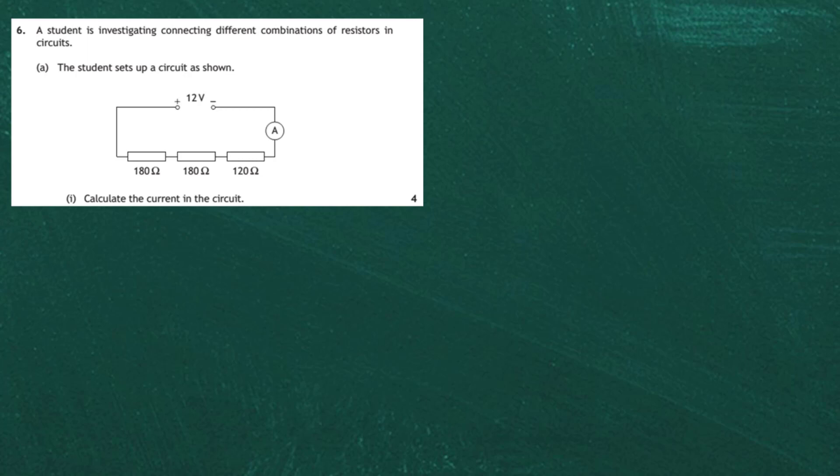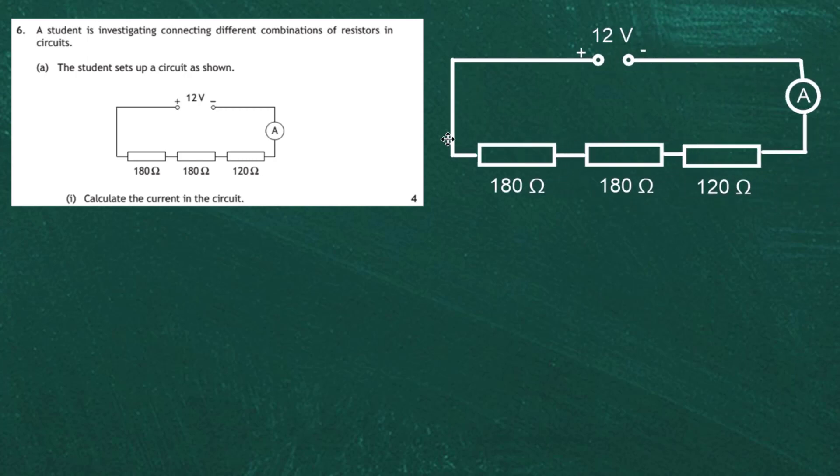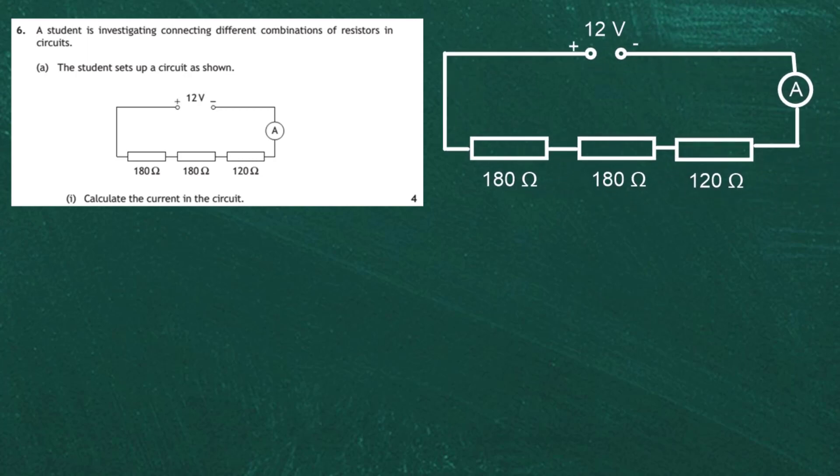Question 6 from the 2019 National 5 Physics examination from the SQA, from section 2. A student is investigating connecting different combinations of resistors in circuits. Part A: the student sets up a circuit as shown, and we've got to calculate the current in the circuit for four marks. This is the reproduction of the circuit, and you can see it's going to be a series circuit because there's nowhere else for the current to go.